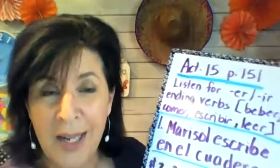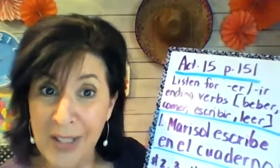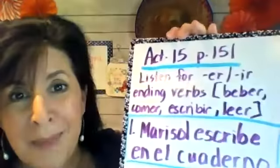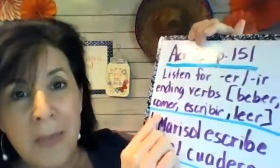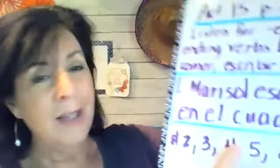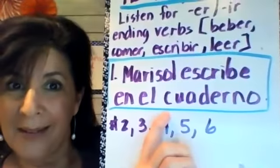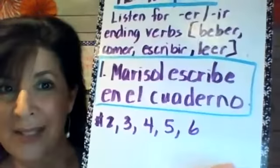You're going to be listening for ER and IR ending verbs that have been conjugated — verbs like beber, comer, escribir, and leer. You'll notice that the activity is like a puzzle. You have your subjects, your verbs, and then your objects, and your job is to put these into complete sentences. For example, you might hear 'Marisol escribe en el cuaderno,' and that could be your answer for number one. You have numbers two through six to complete. All you do is listen and write down your thoughts.